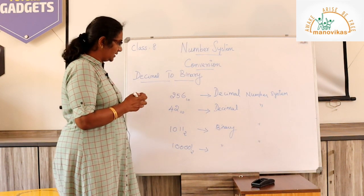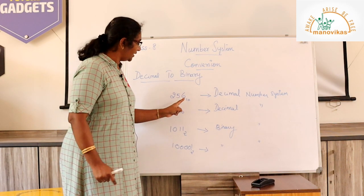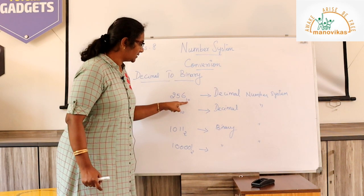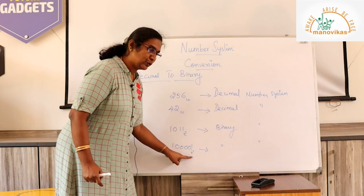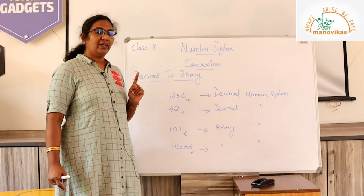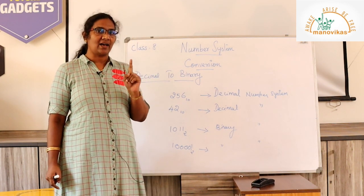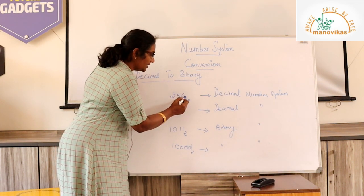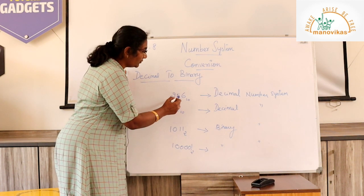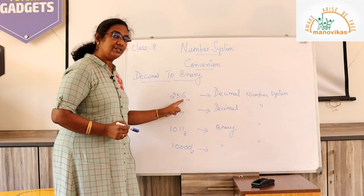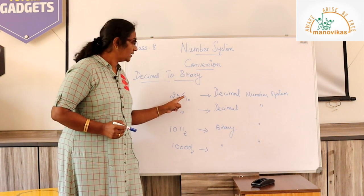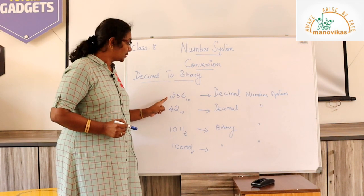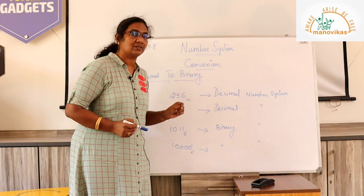The reason is: first, because of the base value — the decimal number system has the base value 10 and binary has the base value 2. One more thing, as per the condition explained in the last video, each and every digit should be below 10. For example in 256, the digits 2, 5 and 6 are all below 10, so this number belongs to the decimal number system.